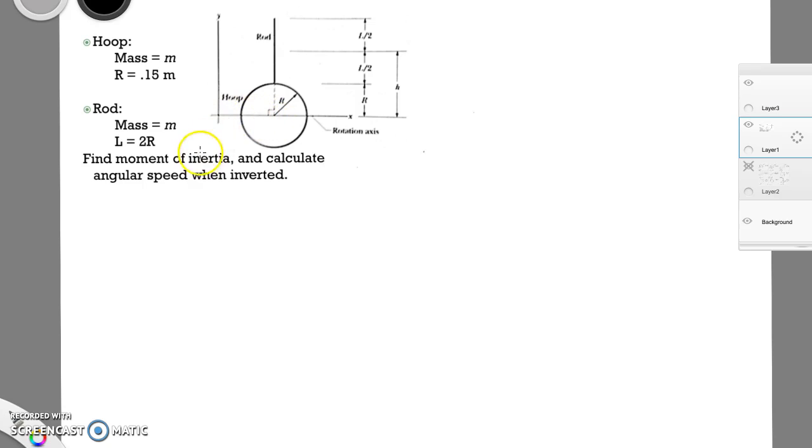But before we do that, we need to find the moment of inertia before we can even talk about rotational potential energy. And so what we're going to do here, we have two shapes. We have this hoop, and we have the rod, and so we're going to have to combine their moment of inertias.